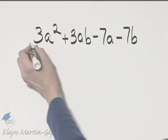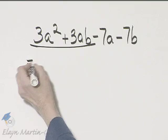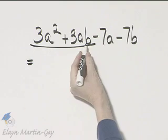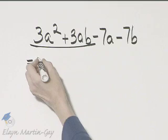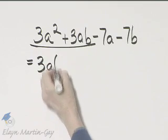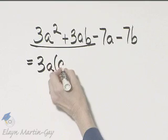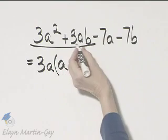So let's try grouping the first two terms. What's common to just the first two terms? What would be common is 3a. So I'll factor a 3a from the first two terms only. If I do so, I'll have a plus b.